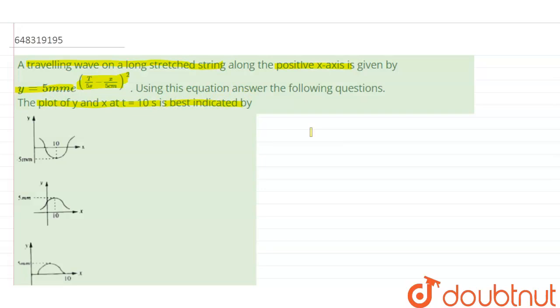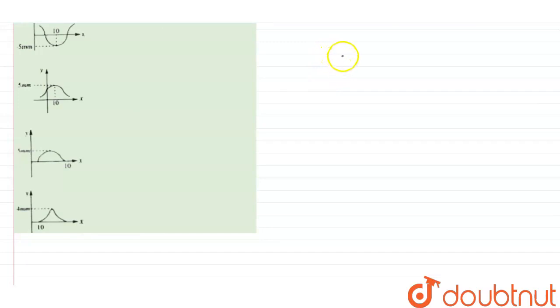So we have to find out the plot of y and x at t equal to 0 best indicated by. So given y equal to 5mm e power t by 5 seconds minus x by 5 centimeters whole square. So at t equal to 0, y equal to 5mm e power minus x by 5 centimeters whole square.